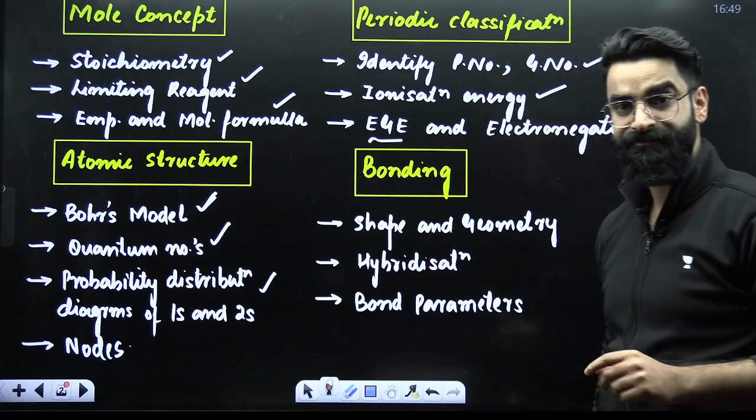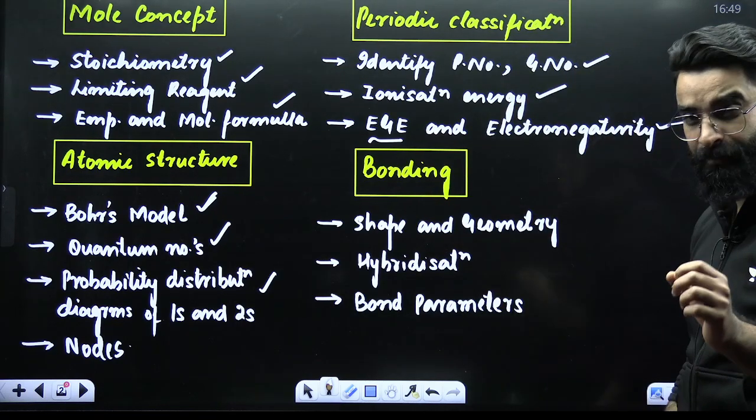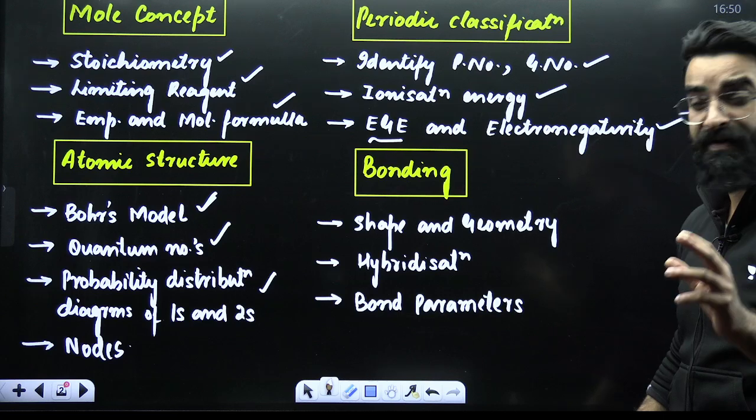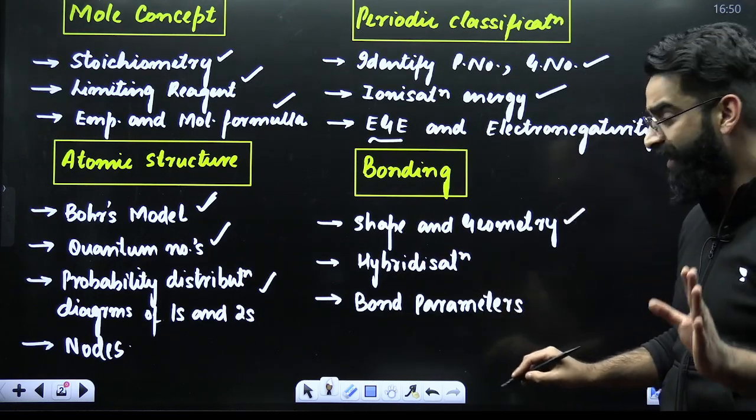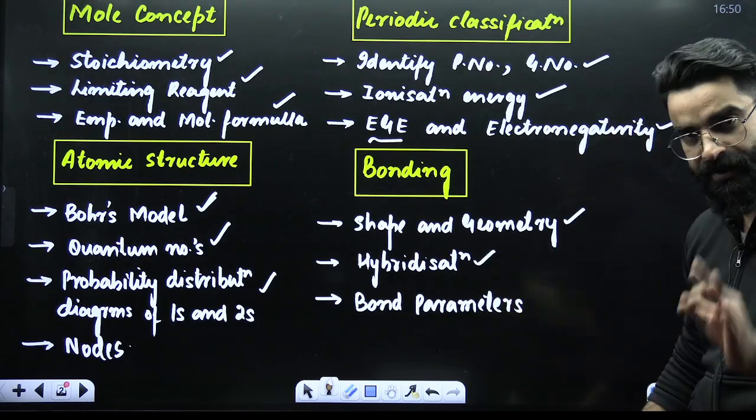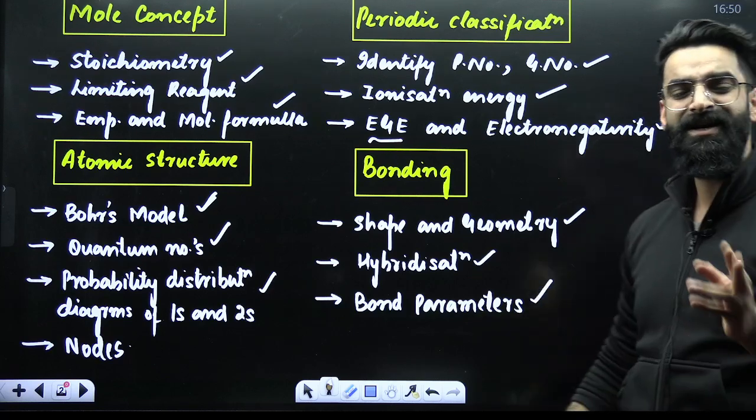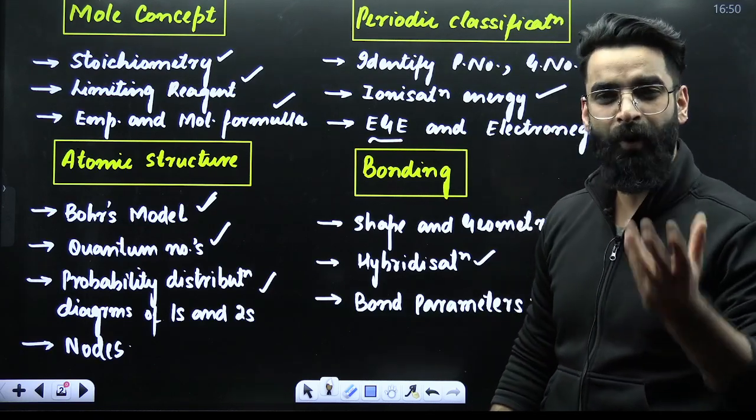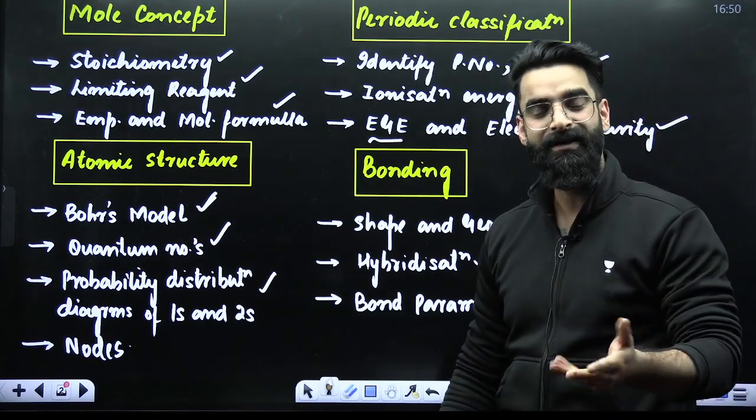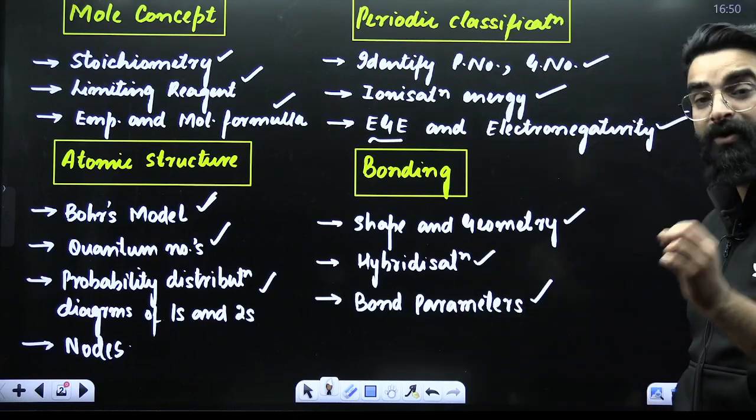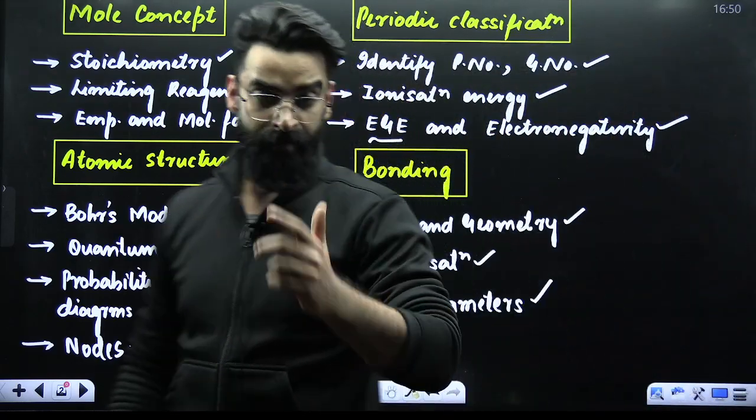When it comes to the bonding. In case of chemical bonding, which consists of your four to five questions. Shape and geometry for sure is going to be asked. Hybridization for sure is going to be asked. Your bond parameters, which involves your bond order, bond length, bond strength. All those things you have to cover on priority.